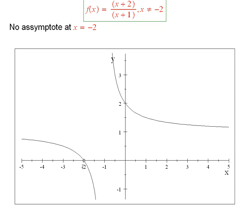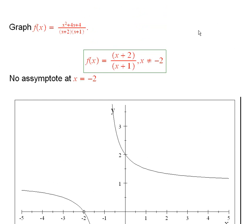It has no asymptote at negative 2 because it isn't even defined there. And when x approaches negative 2, the top of the function, the numerator, also approaches 0. And so there's no behavior of the function blowing up there.